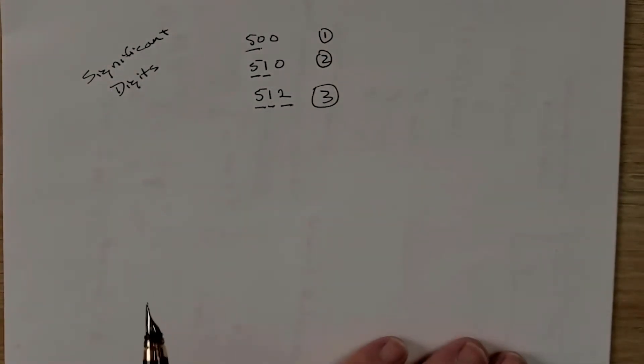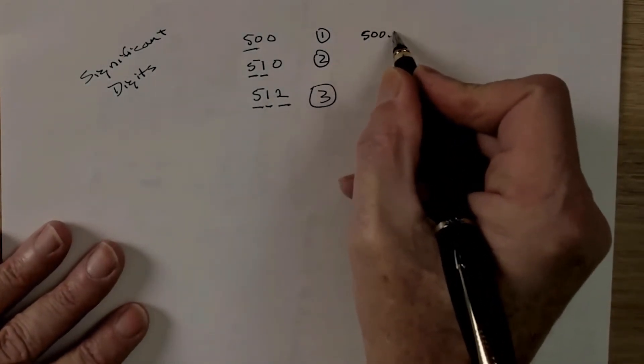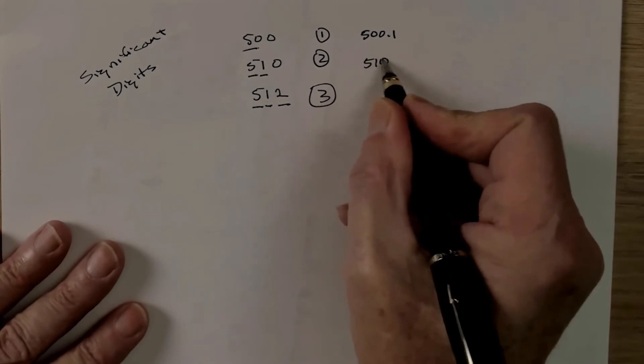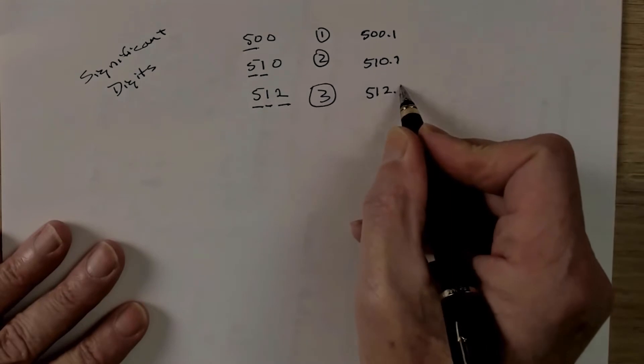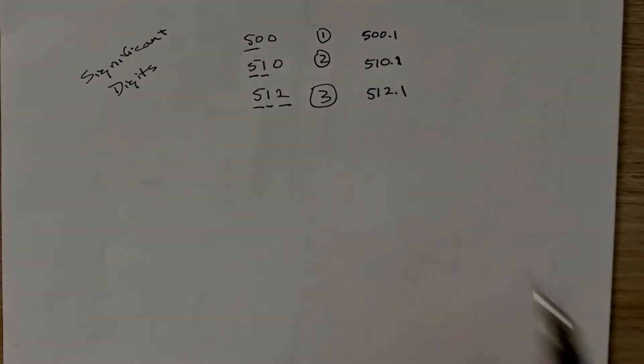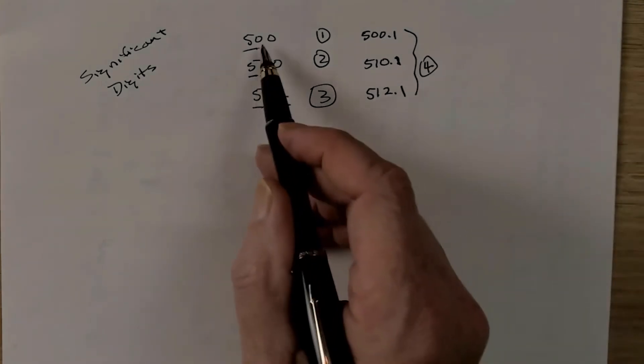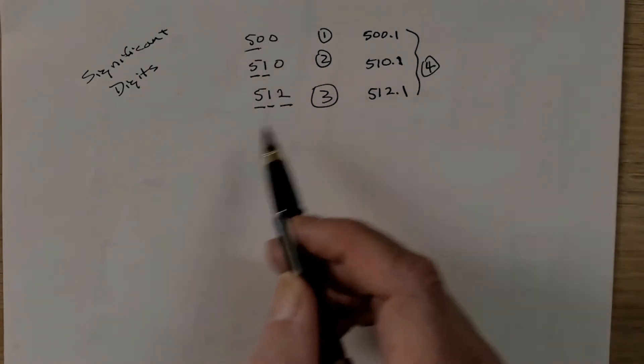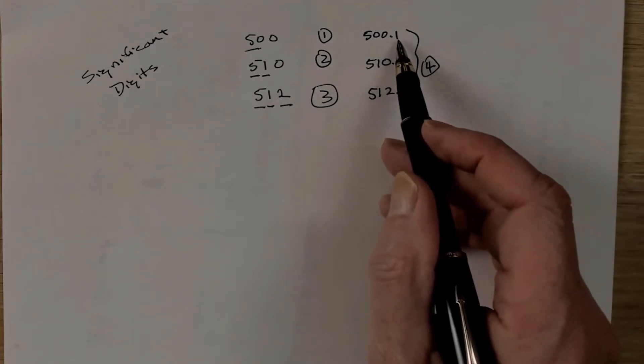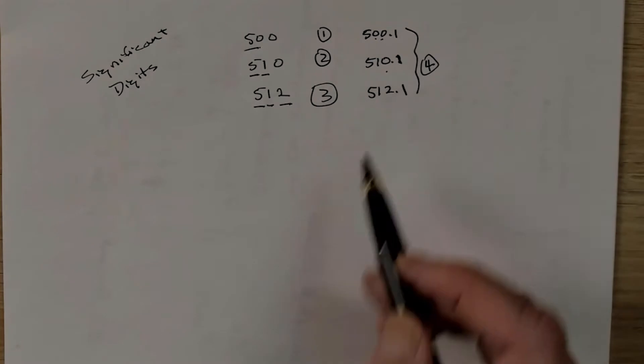Now one thing that we can also add to it, say we change these numbers a little bit to something like this. These are all four significant digits. These zeros are not significant when they're just to the left of the decimal point. However, if you have something after the decimal point, the implication is that these are also significant as well.